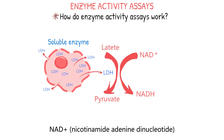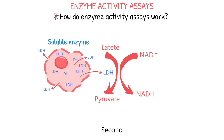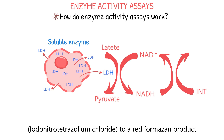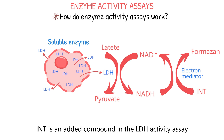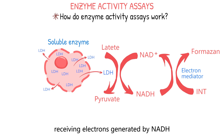NAD+, or nicotinamide adenine dinucleotide, is a coenzyme that is initially present in cells. Second, diaphorase uses NADH to reduce the INT, or iodonitrotetrazolium chloride, to a red formazin product. INT is an added compound in the LDH activity assay intentionally introduced into the reaction so that it can serve as an electron acceptor, receiving electrons generated by NADH.